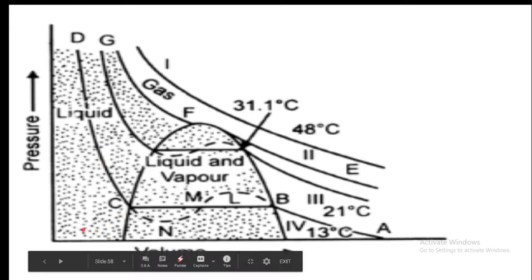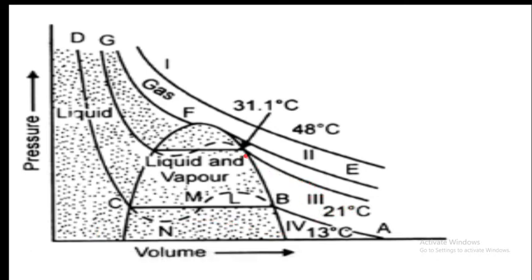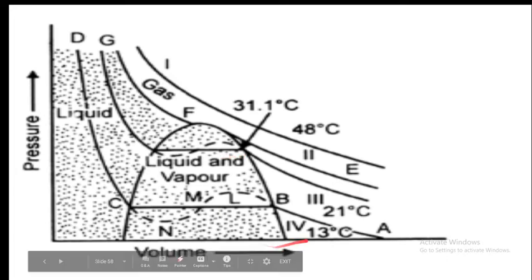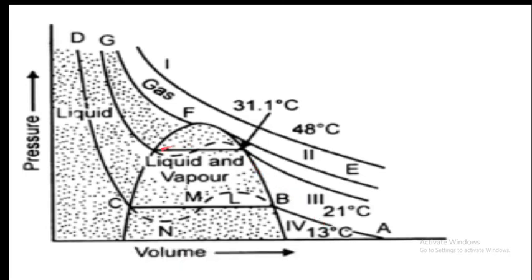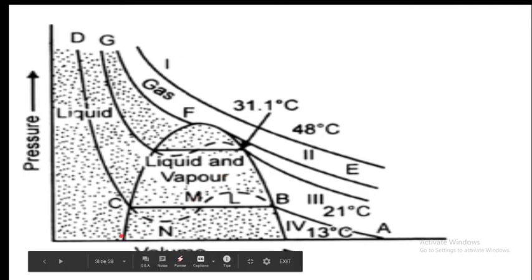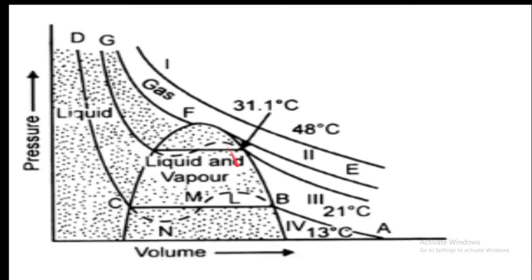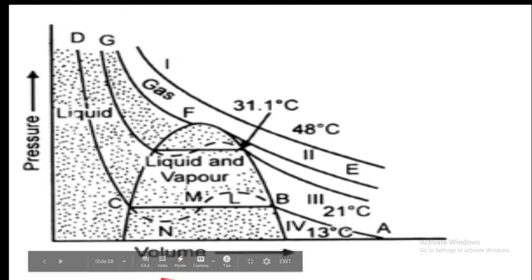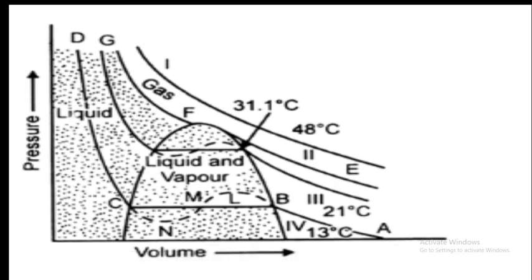Now let us consider other isotherms. The next isotherm is at 21 degrees centigrade. At 21 degrees centigrade, it is similar to the isotherm at 13 degrees centigrade, but the horizontal portion is shorter. In any isotherm, for a slightly higher temperature, the horizontal portion gets shortened. This parabolic curve CFD is called the co-existence curve, and it represents the shortening of the horizontal portions of the isotherms with increasing temperatures.